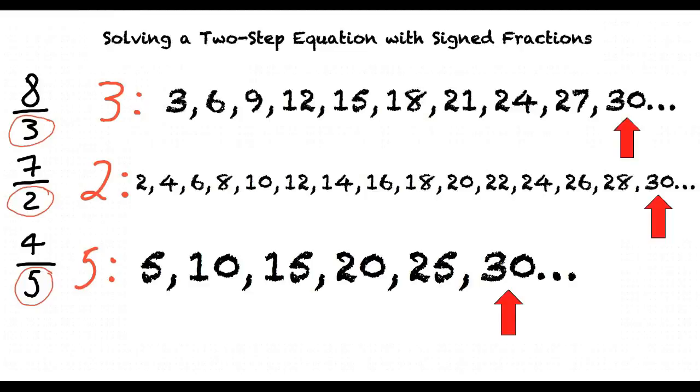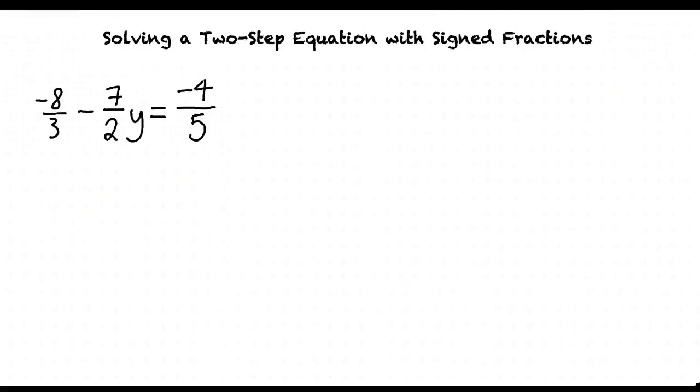Now that we have the least common denominator for these fractions, let's incorporate these fractions into an example equation. Negative 8 thirds minus 7 halves times y equals negative 4 over 5.